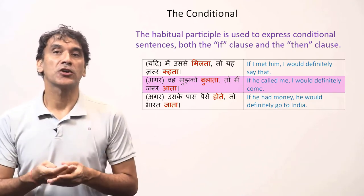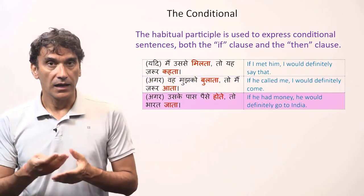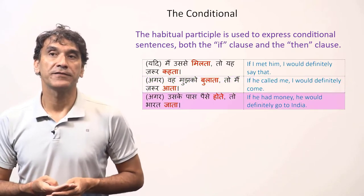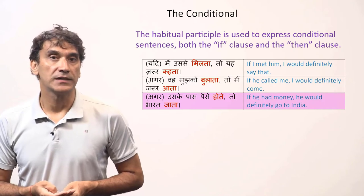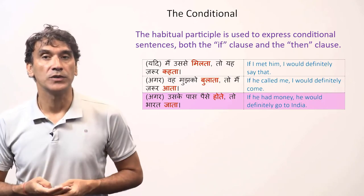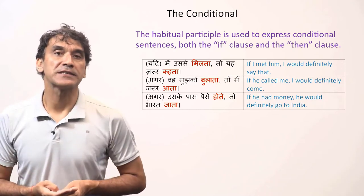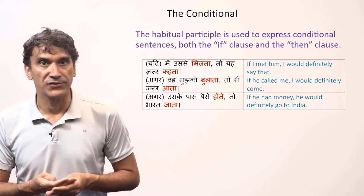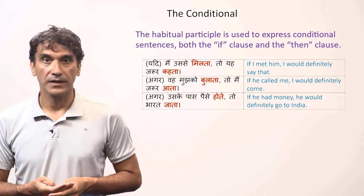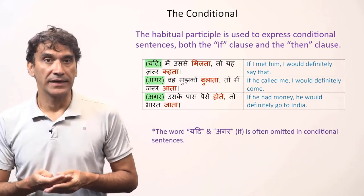So he did not call me and I did not come. If he had money, he would definitely go to India — so he did not have money and he did not go to India. The conditional expresses a probable action that did not get realized because the conditions were not met. In Hindi, you can see the words yadi and agar in brackets.